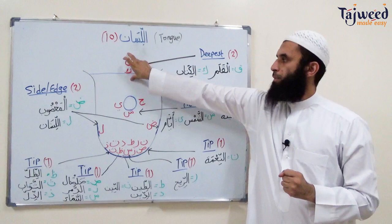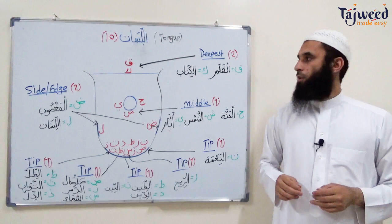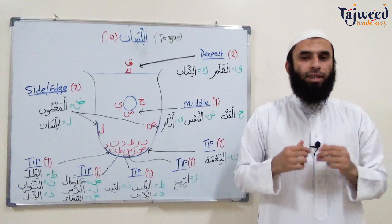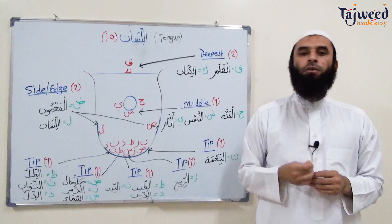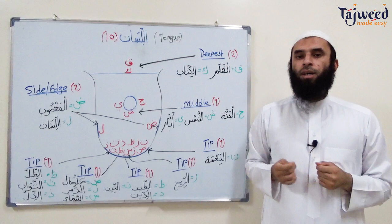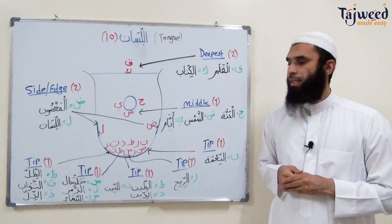So that is al-lisan, the fifth area of the makhraj points. Al-lisan has four different areas: the deepest part at the back, the middle part, the sides, and the tip of the tongue. To summarize all five areas of makhraj al-huroof: al-jauf — the empty part of the throat and mouth; al-khayshum — the nasal passage; al-shafatan — the lips; al-halq — the throat; and today's al-lisan — the tongue.